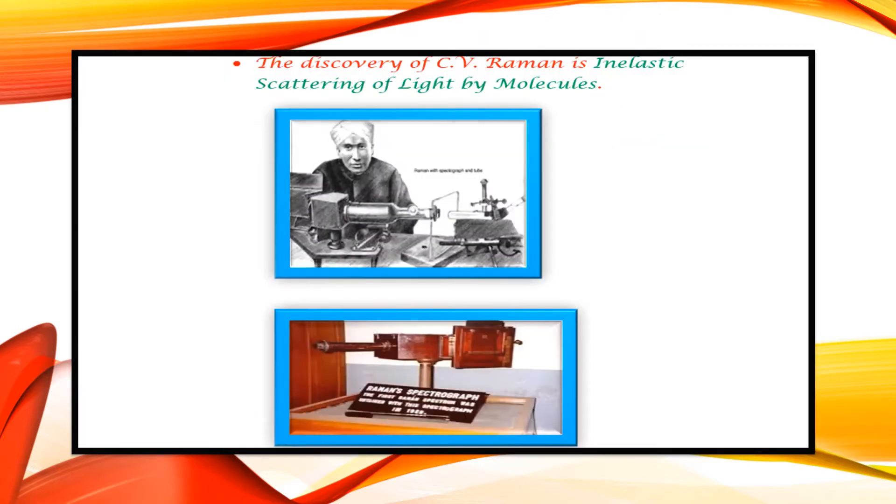C.V. Raman was an Indian-born theoretical physicist who discovered the Raman effect in light. His discovery of inelastic scattering of light by molecules led him to receive the Nobel Prize in 1930.